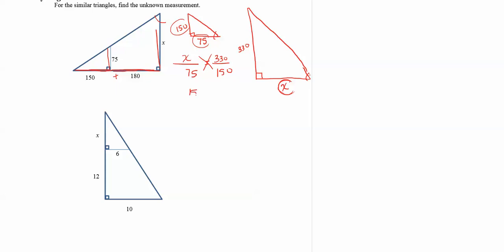And then we cross multiply. x times 150 is 150x, put equals, and then we're going to multiply diagonally 75 times 330, and that's 24,750. Now to solve for x we need to divide by 150 on both sides of this equation. So x equals 24,750 divided by 150 or 165.